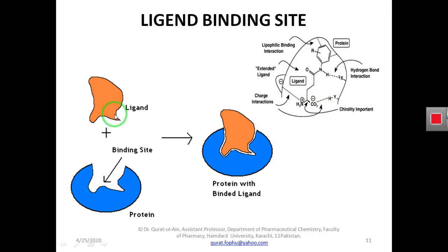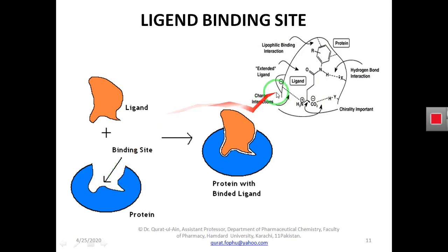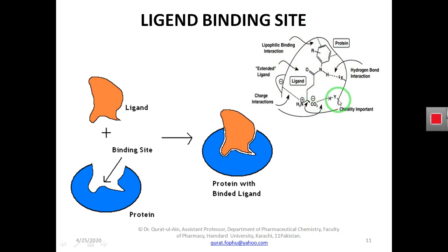The place where the ligand binds to the receptor is termed the ligand binding site. This site is complementary to the surface of the ligand that must bind with it. The ligand binding site is lined with amino acid residues. We can see the ligand fitting into the ligand binding site because this site is complementary to the ligand. The ligand gets attracted to the ligand binding site due to the presence of different forces.